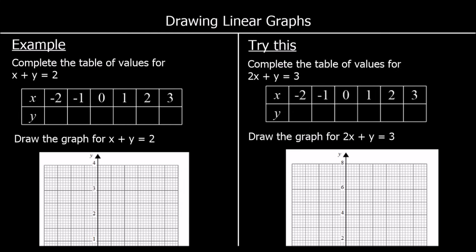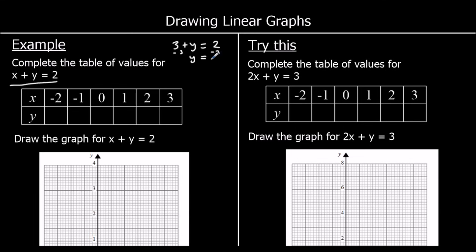Here we have another example. This time our equation is in a slightly different form — the equation says x plus y equals 2. But apart from that, we're still doing the same thing. We've got a table of values and we've been given the x coordinates, and we need to use them to work out the y coordinates. So when x is 3, what is y? If x is 3, that gives us 3 plus y equals 2. To get y by itself, we can take 3 away from both sides — as long as you do the same thing to both sides it will stay equal. So subtracting 3 from both sides gives 2 minus 3 on the right side, which is negative 1.